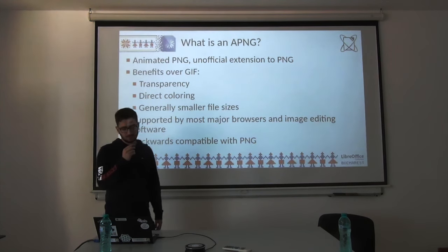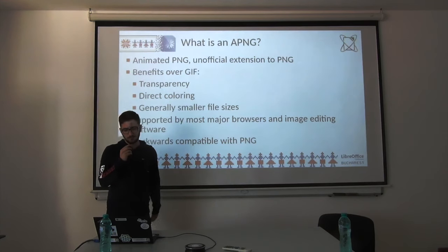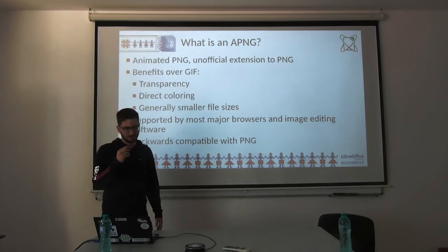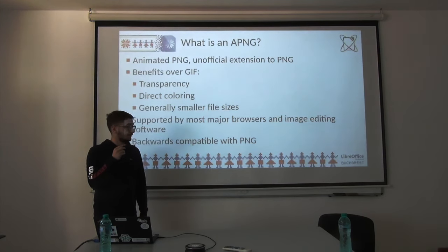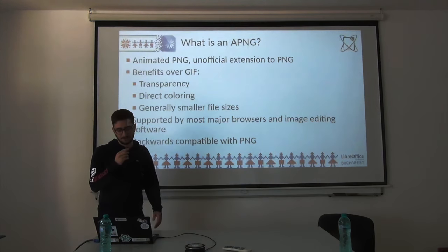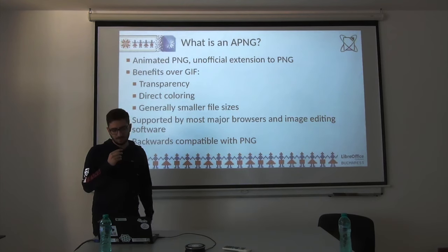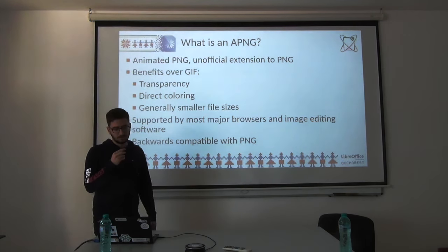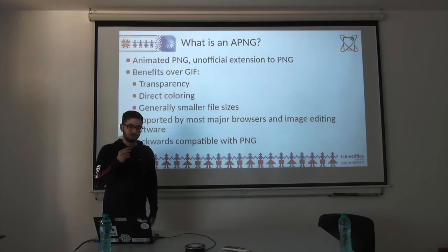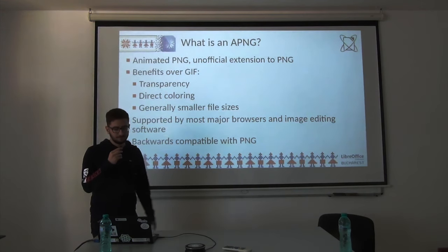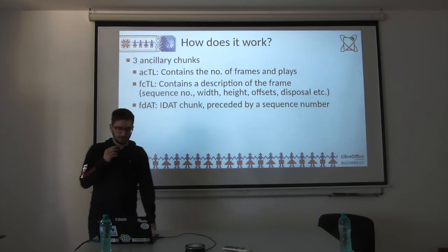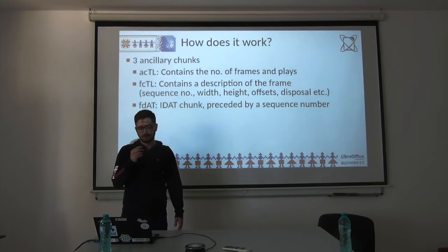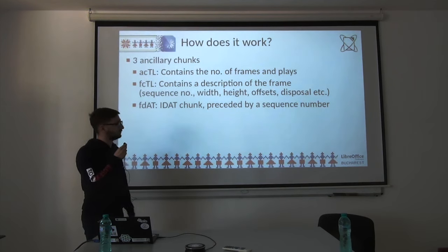APNG has some advantages over GIF. One is partial transparency: GIF supports transparency so you can make the background transparent, but you can't have partial transparency — PNG supports that. You also have direct coloring; GIF works with palettes and can have 256 colors per frame, but PNG doesn't have that limitation. Generally, APNG also has smaller file sizes. The format is backwards compatible with PNG, meaning APNGs would appear as the first PNG frame in unsupporting software, since unsupported ancillary chunks are ignored.